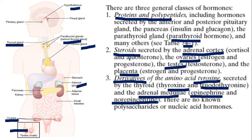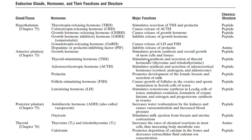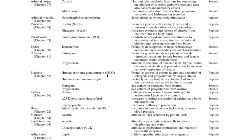So there are three types of hormones based on their chemical nature. A table is provided showing the glands, the hormones, their major functions, and their chemical nature — these are described in different chapters of the textbook. Go through the table very carefully, identify the textbook, and make further notes from it.